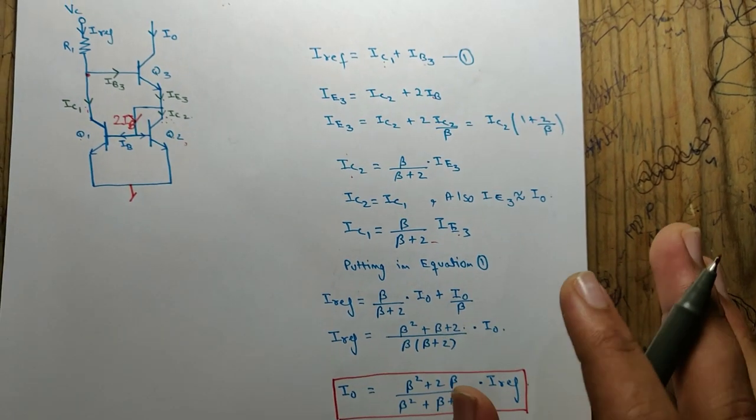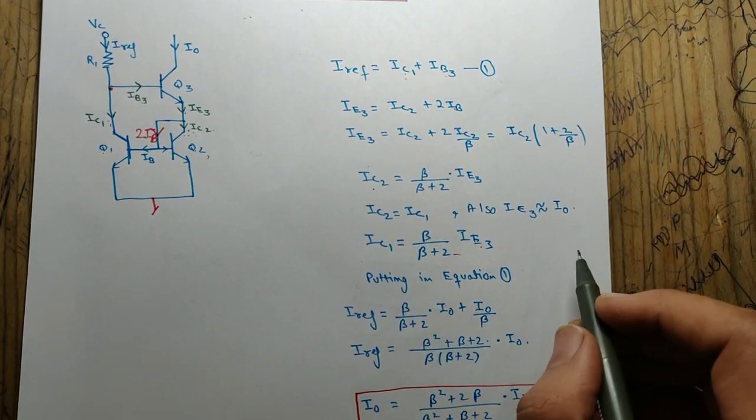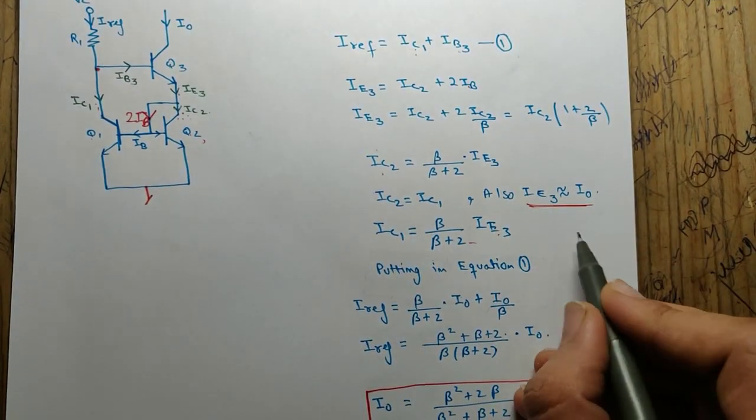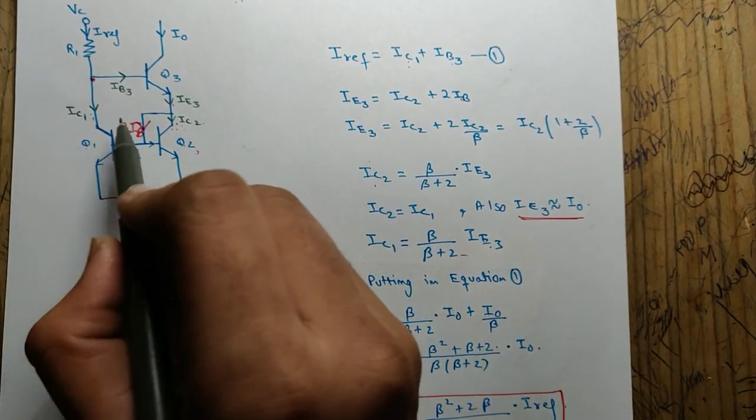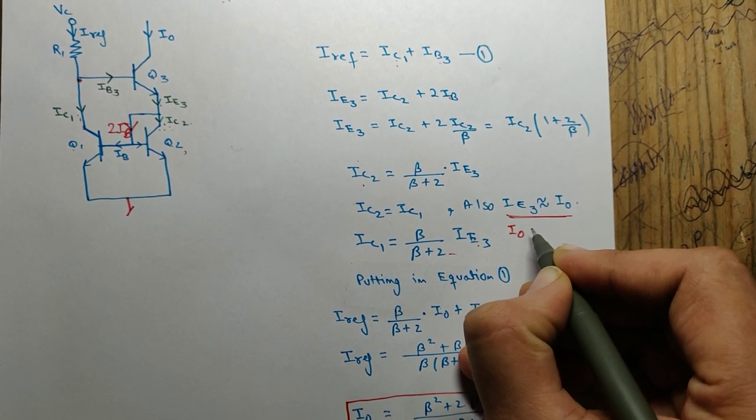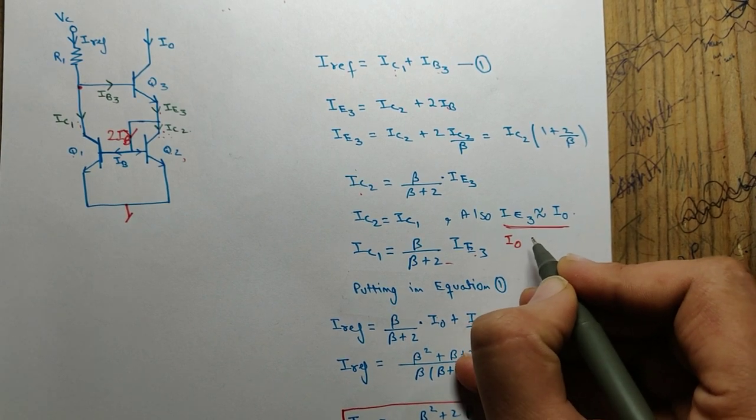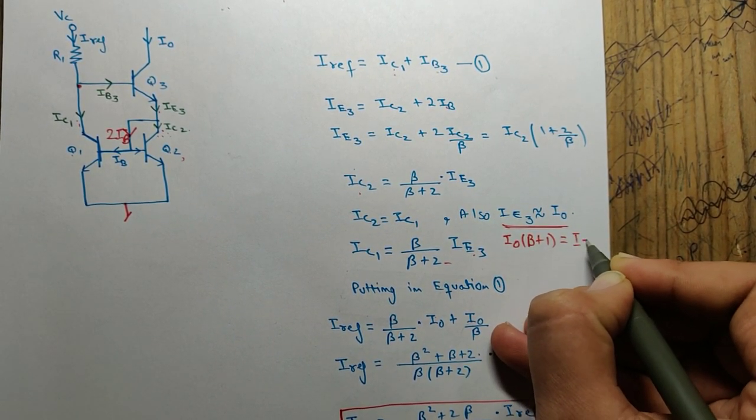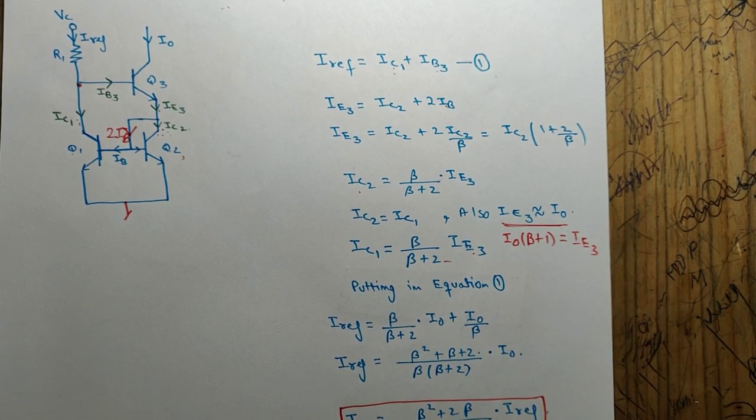Now if you don't want to assume this, sometimes you can't assume this. If it is mentioned in question that ie3 is not equal to i0, you can simply write i0 times (beta plus 1) is equal to ie3. So now if you want to write it here, you put this value of ie3 here.